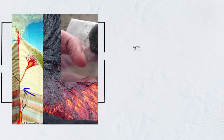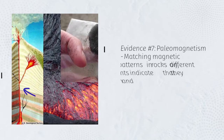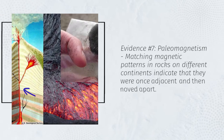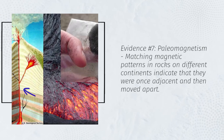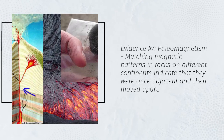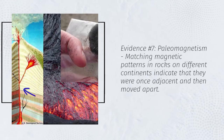Evidence number seven: Paleomagnetism. Matching magnetic patterns in rocks on different continents indicate that they were once adjacent and then moved apart.